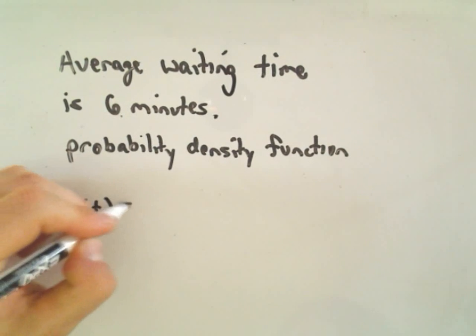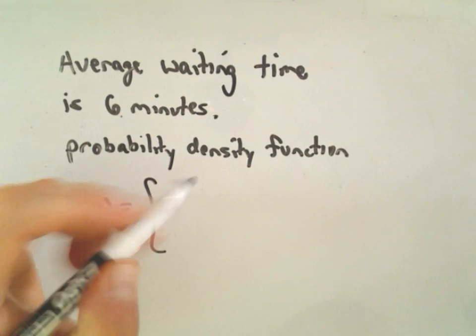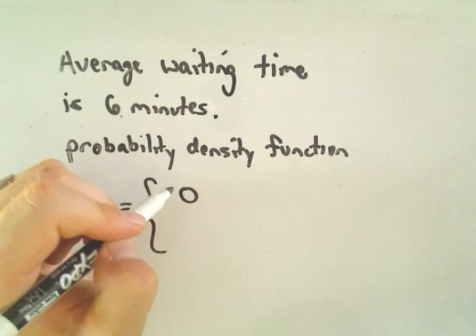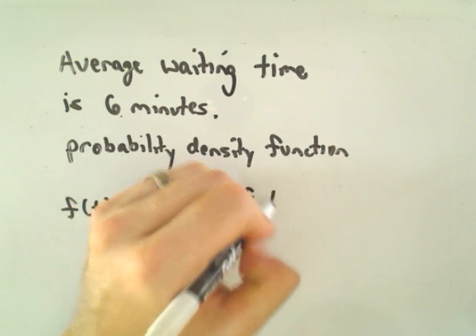So, okay, so our probability density function, f of t, well, it's going to have value zero if t is less than zero.